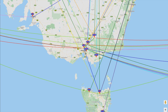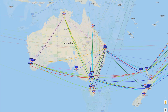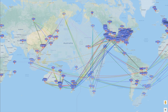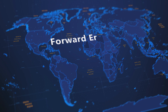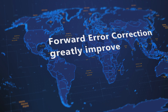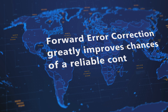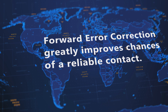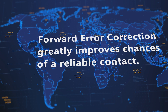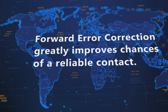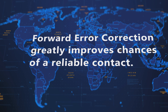The data is sent using a compressed data format with strong forward error correction (FEC) and narrowband four-tone frequency shift keying (FSK). The forward error correction greatly improves chances of a copy and reduces errors to an extremely low rate.